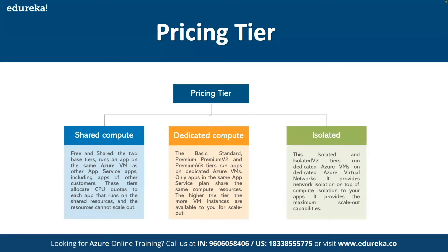For dedicated compute, the Basic, Standard, Premium, Premium v2, and Premium v3 tiers run applications on dedicated Azure virtual machines. Only apps in the same app service plan share the same compute resources, and the higher the tier, the more virtual machine instances are available to scale out. The isolated and isolated v2 tiers run dedicated Azure virtual machines on a dedicated Azure virtual network, providing network isolation on top of compute isolation for maximum scale-out capabilities. Each tier provides a specific subset of features including custom domain, TLS/SSL certificates, auto-scaling, deployment slots, backups, and traffic manager integration.